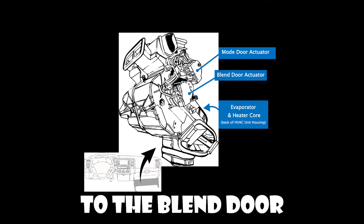When the temperature setting is adjusted, the blend door actuator rotates the blend door to mix the hot air from the heater and the cold air from the air conditioner to achieve the desired temperature. Without a properly functioning blend door actuator, the vehicle may not be able to maintain the desired cabin temperature.